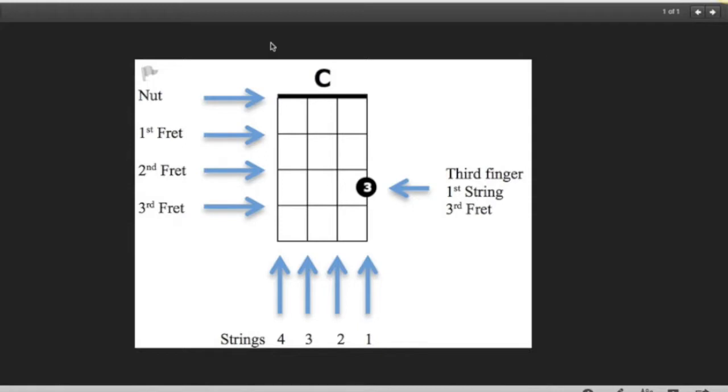What you have on your ukulele that's missing from this chord chart is the headstock where all the tuners are, right here. At the bottom, the other part that's missing is the rest of the neck and the body of the ukulele.